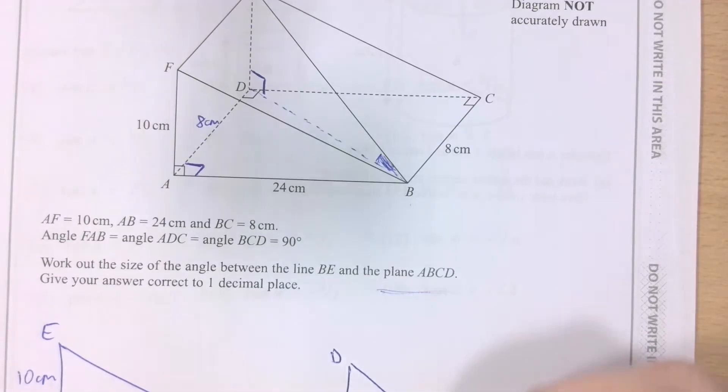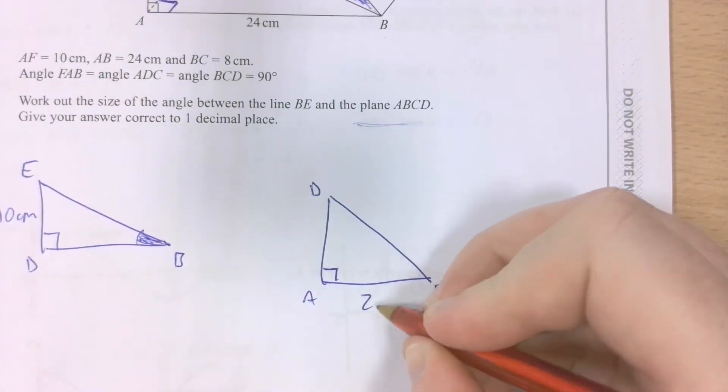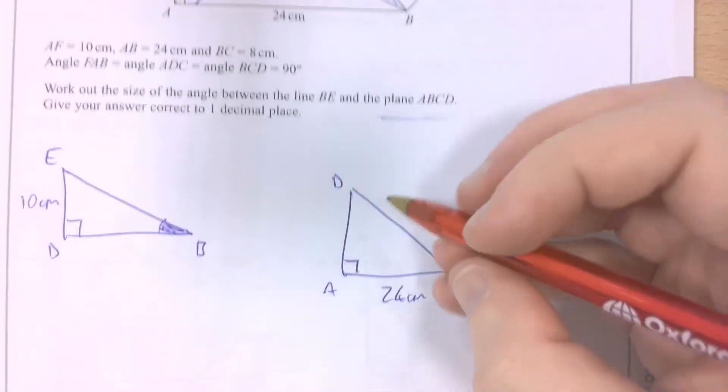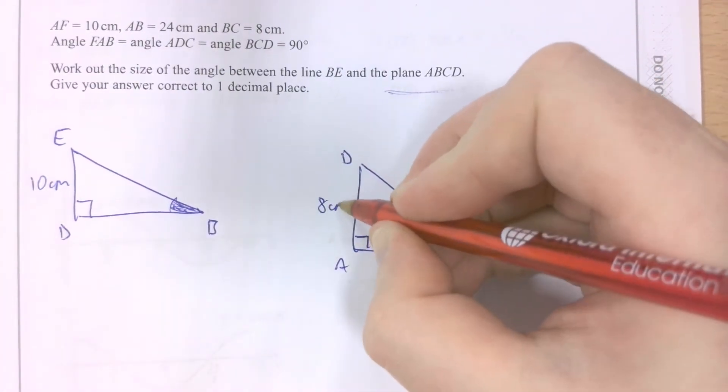And then this length AB, 24 centimetres. And similarly, as we did before, because this is 8 centimetres, length AD is also going to be 8 centimetres.